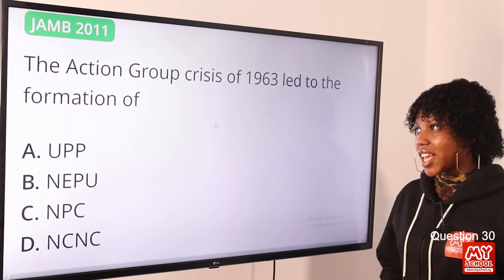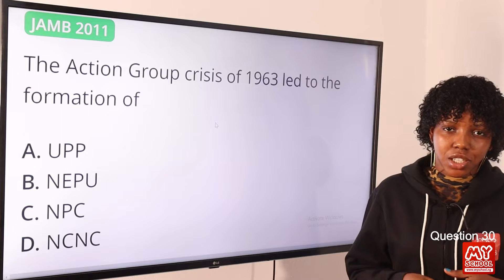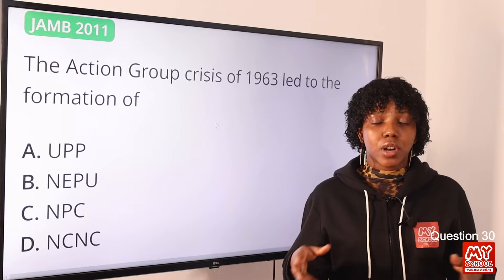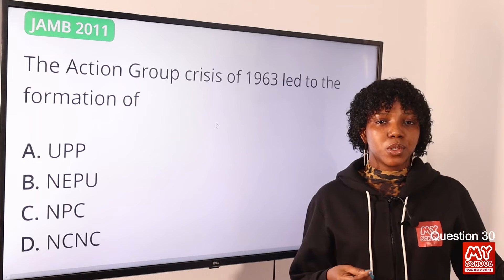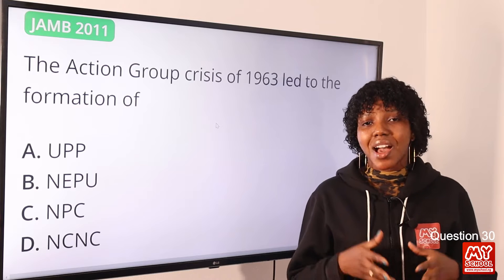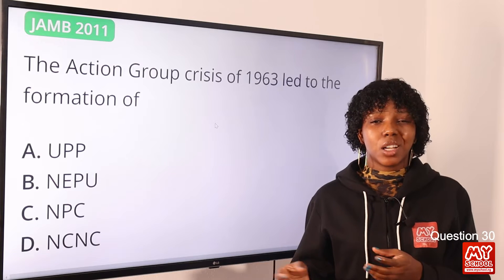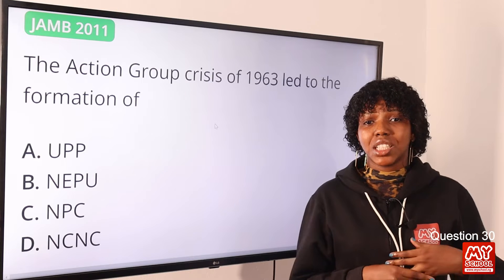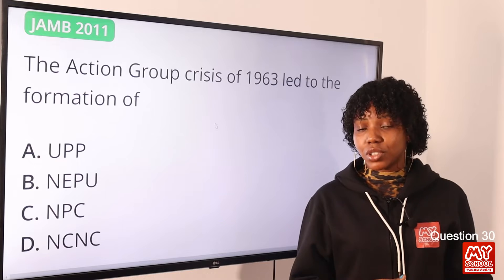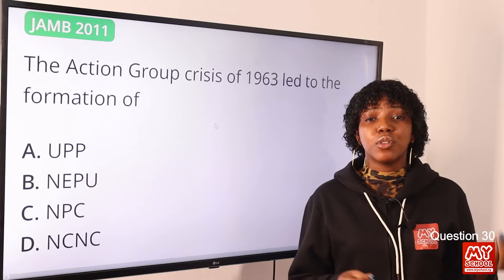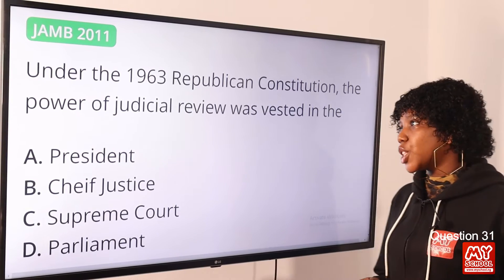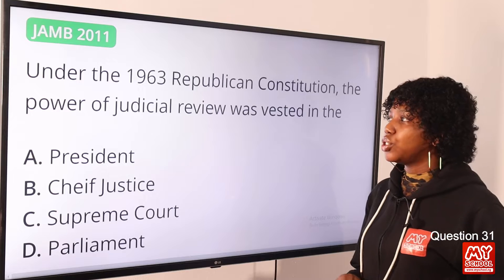Question 30: The Action Group crisis of 1963 led to the formation of — the United People's Party (UPP). The Action Group crisis was between Awolowo, who was the party leader, and Akintola, the deputy. Awolowo and other members were charged with treasonable felony and conspiracy to overthrow the government. Awolowo was sentenced to 10 years in prison. Akintola was reinstated as Premier of the Western Region and formed the United People's Party. The answer is option A, UPP.